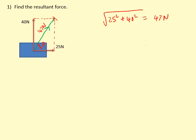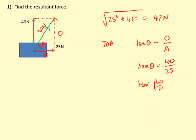To find the angle, we have the 25 and the 40, which are adjacent and opposite. What we need to use is trigonometry. Using TOA (tan equals opposite over adjacent), tan theta equals opposite (40) divided by adjacent (25). Tan inverse of 40 over 25 gives an angle of 58 degrees.